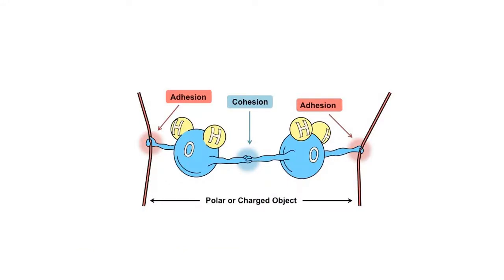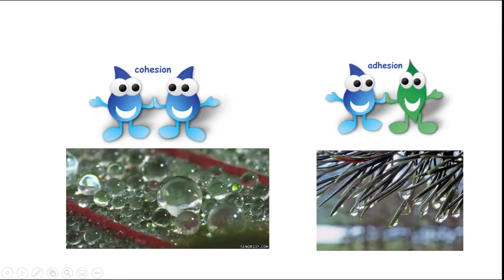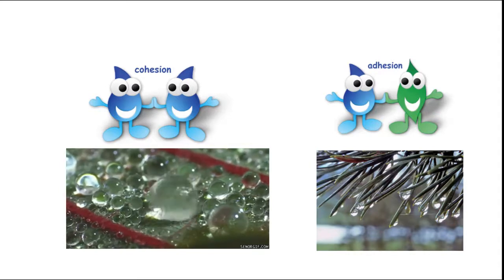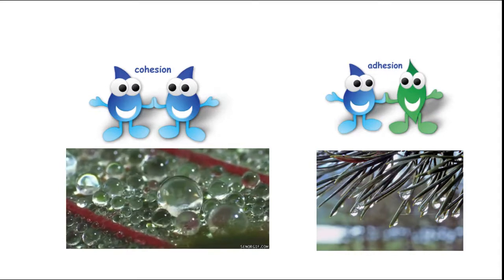While cohesion refers to the attraction between molecules of the same type, adhesion refers to the attraction between two different types of molecules. Water likes to stick to itself but can also adhere to other polar and non-polar surfaces, a property called adhesion. We earlier observed that cohesion causes water to form drops. On the other hand, adhesion keeps the water drops on the surfaces of leaves in place.